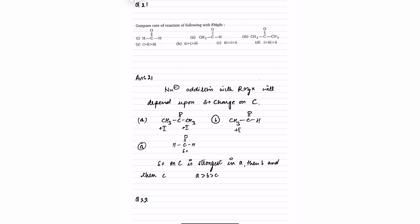Question number 21: compare the rate of reaction of the following with RMgBr. One thing to understand is RMgBr always generates R minus, which can act as a nucleophile or as a base depending upon the situation. To find the rate of reaction, we need to see how strong the delta positive charge on the carbon is.